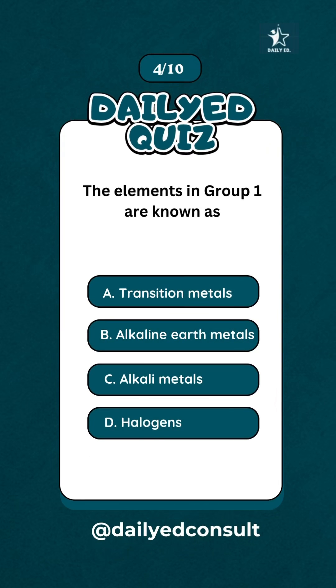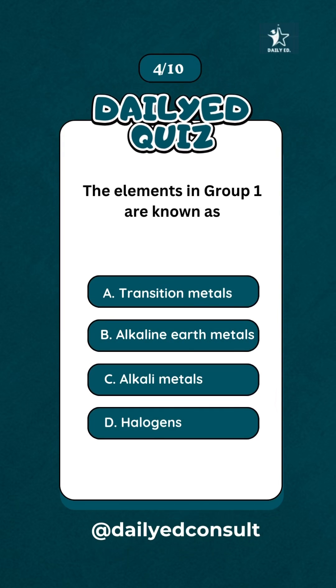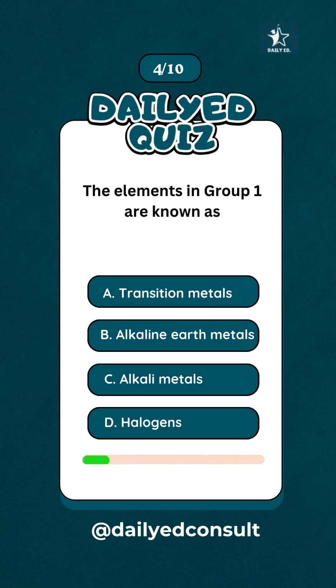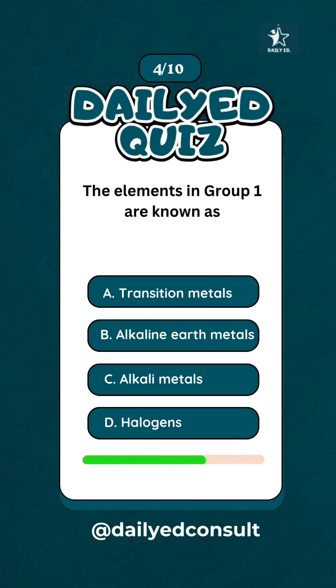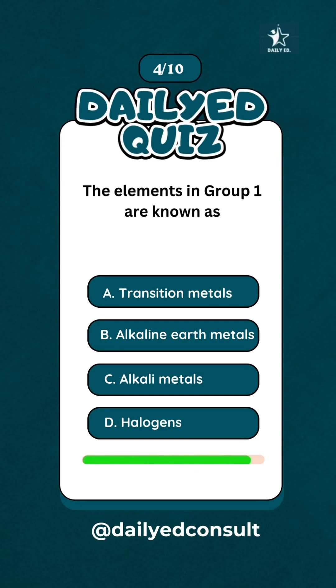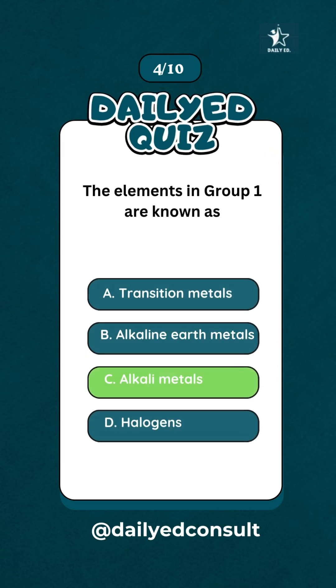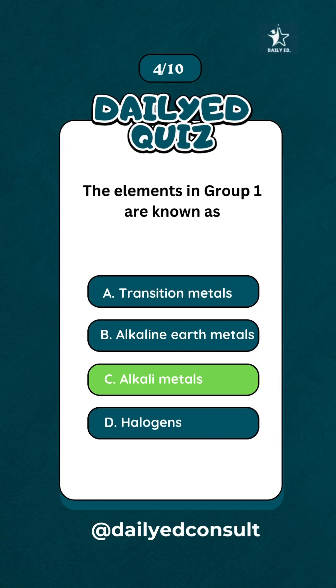The elements in group 1 are known as... Alkali metals.